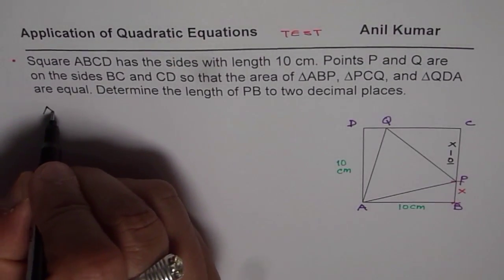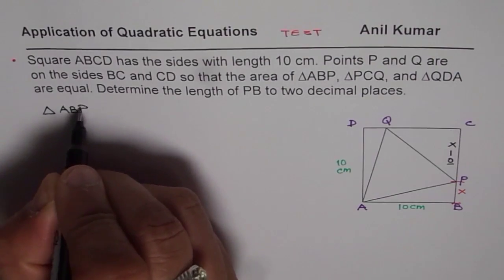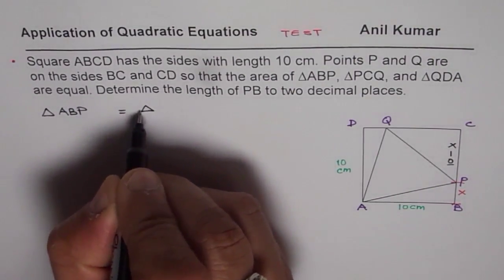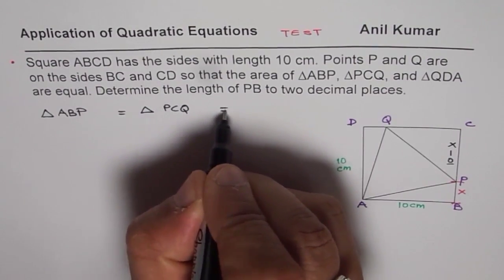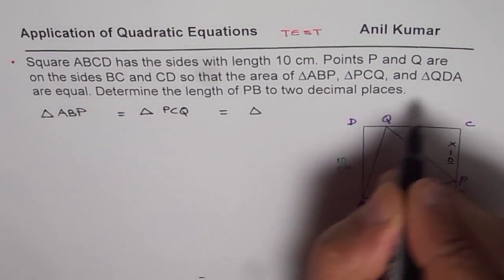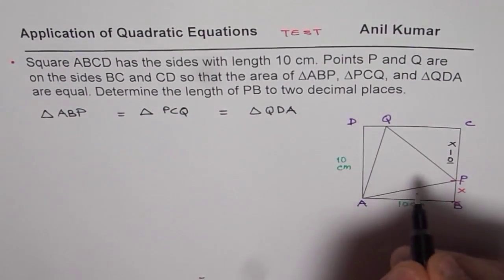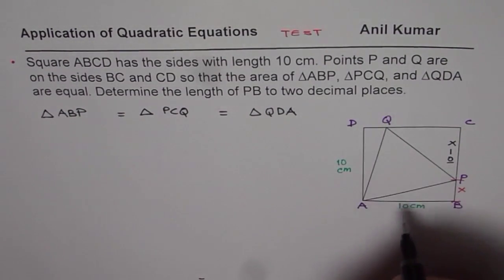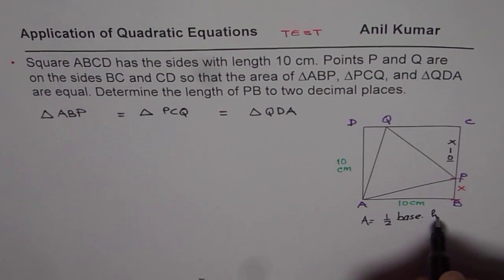What we are given here is that the area of triangle ABP is equal to the area of triangle PCQ and that is also equal to area of triangle QDA. What is area of triangle? We know area of triangle is, in general, half base times height.